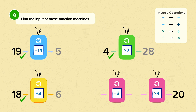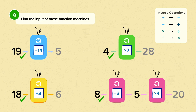Here we have a double function machine, so again we have to be extra careful. We start at the 20 and go backwards. So 20, and we need to do the inverse of multiplying by 4, which is dividing by 4. 20 divided by 4 is 5. Again, the 5 needs to go backwards through the second function machine. So the inverse of taking away 3 is adding 3. 5 add 3 is 8. We can check our answer: 8 take away 3 is 5, and 5 times 4 is 20. So we know we've got this answer right.